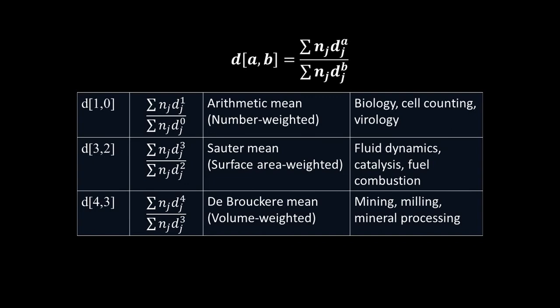Another important average is the surface area weighted mean, or Sauter mean, d32, where the average is weighted by a factor of diameter squared. This is useful for applications where the surface area is important, like catalysis or fuel combustion. Again, the more important question is what biasing factor you choose, and why.